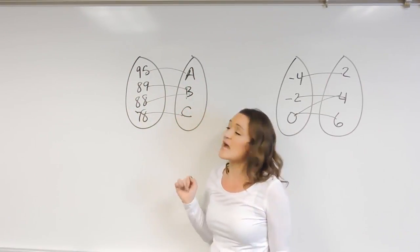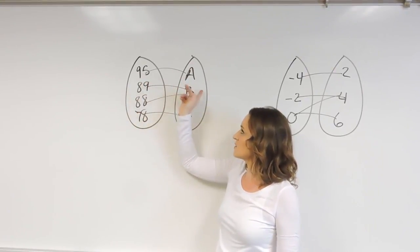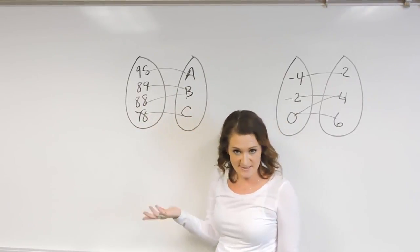This first example over here deals with grades. So 95 goes to an A, 89 goes to a B, 88 is a B, and 78 is a C.